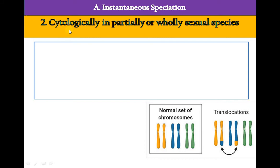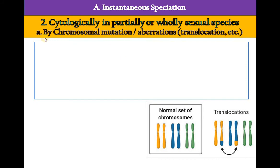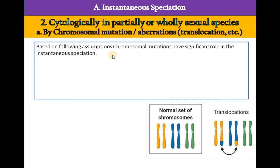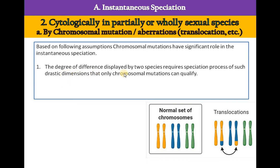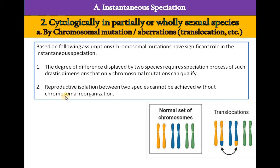The second way of instantaneous speciation is cytological, occurring in partially or only sexual species. The first cytological mechanism is by chromosomal mutations or chromosomal aberrations. Based on two key assumptions: first, chromosomal mutations have a significant role in instantaneous speciation, as the degree of differences between two species requires such drastic dimensions; and second, reproductive isolation between two species cannot be achieved without chromosomal reorganization.